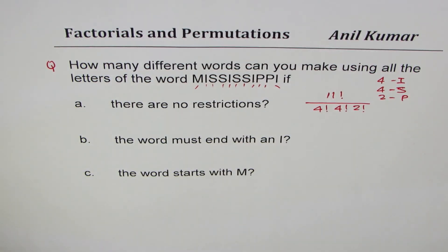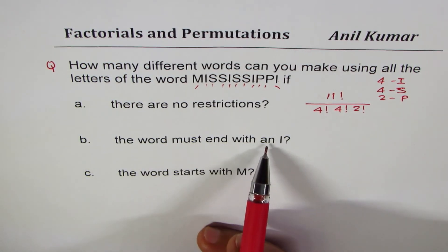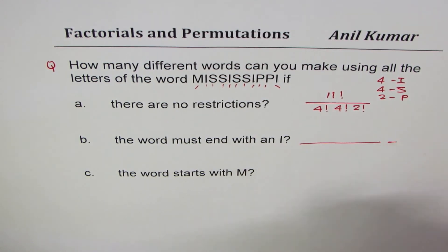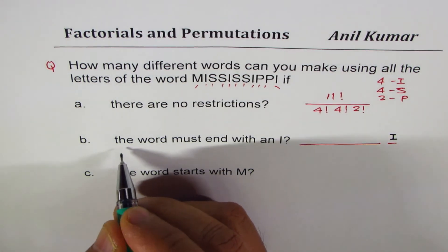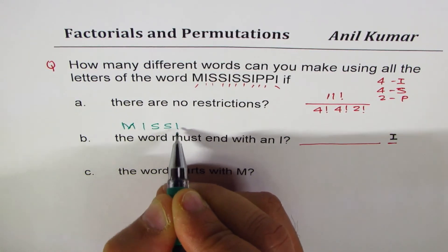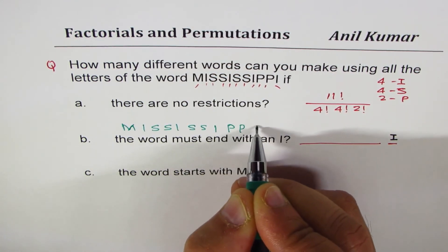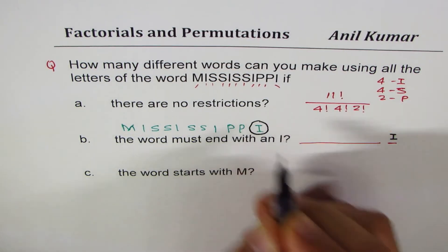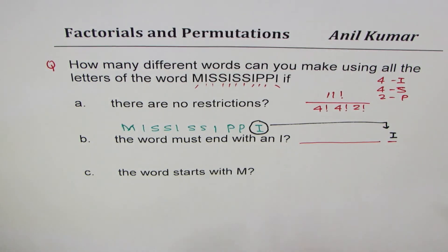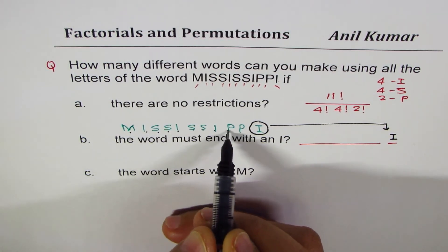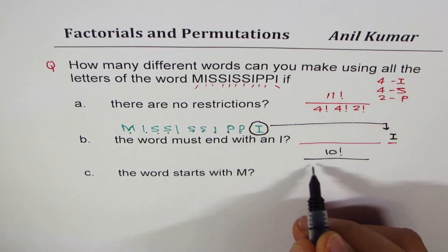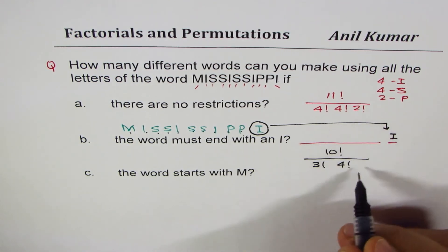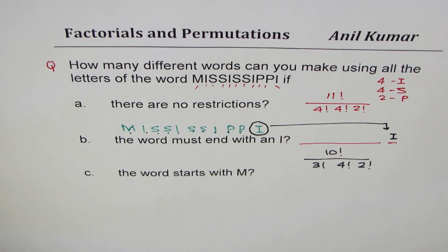Case 2: the word must end with I. We fix one I at the end, leaving 10 letters: M, I, S, S, I, S, S, P, P — with three I's, four S's, and two P's remaining. The answer is 10 factorial divided by 3 factorial times 4 factorial times 2 factorial.